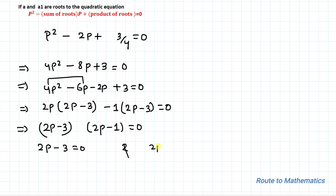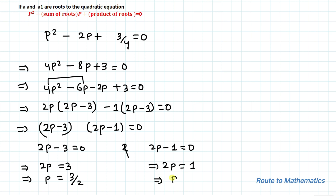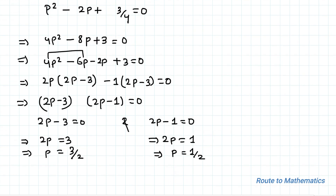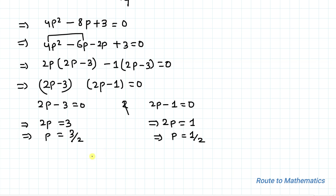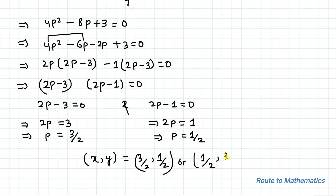From here, 2p − 3 = 0 gives p = 3/2, and 2p − 1 = 0 gives p = 1/2. We were asked to find the value of x and y, so the answer is x = 3/2 and y = 1/2, or vice versa: x = 1/2 and y = 3/2. I hope you understood the solution. Thanks for watching — please subscribe to my channel and click the bell icon for more such interesting videos.